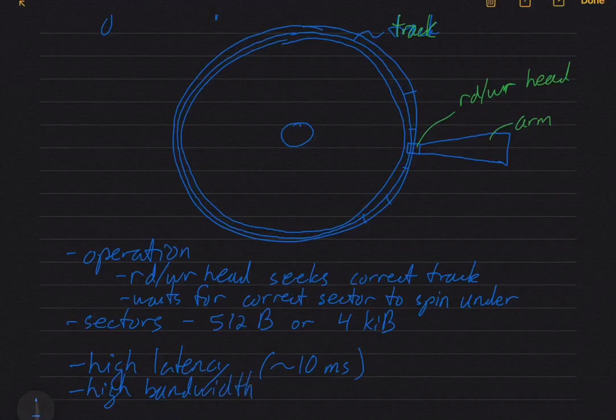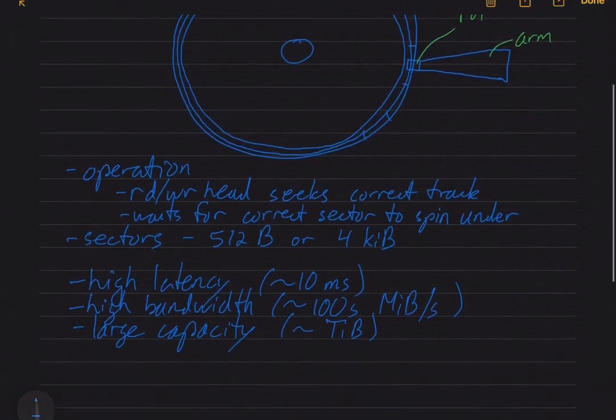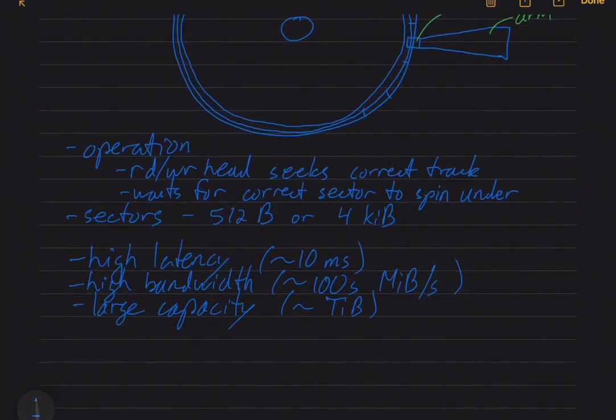So the operating system will try to put data from a file into consecutive sectors so that once it starts reading one, the next one's right there and there isn't any kind of latency while the next sector is read. And so the bandwidth of these things is in the order of hundreds of megabytes or maybe bytes per second. And they have large capacity. So in the order of terabytes or tebibytes. So that's why we still use them.